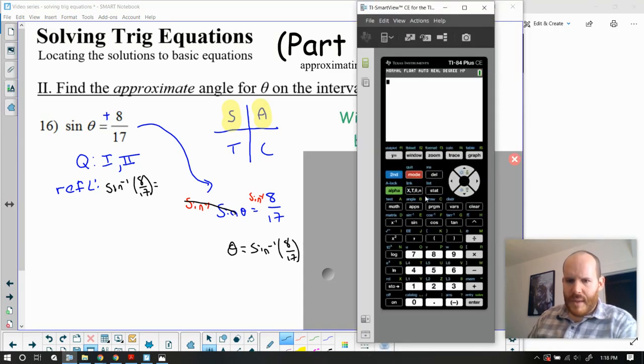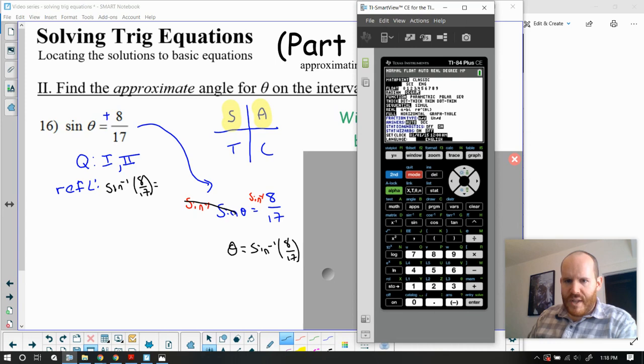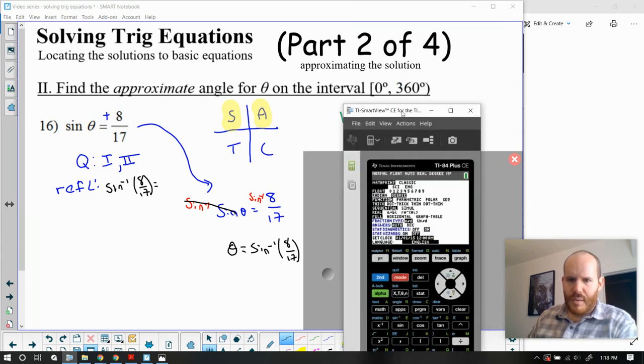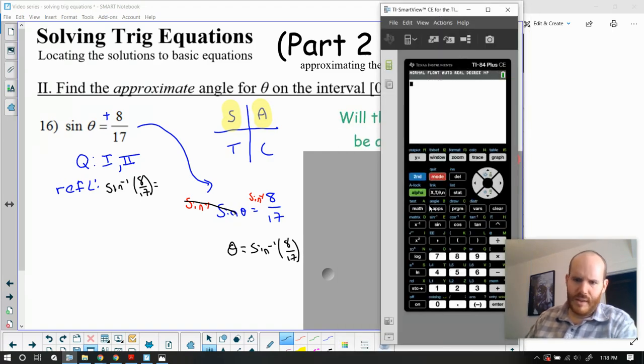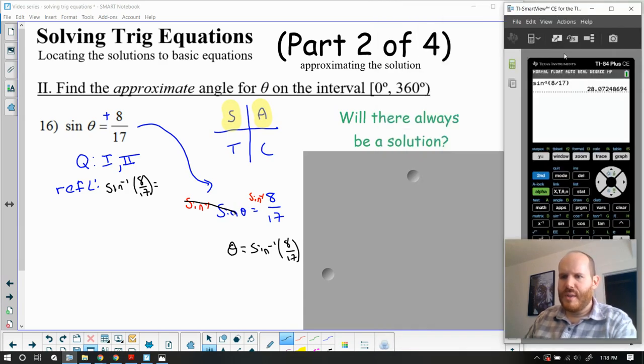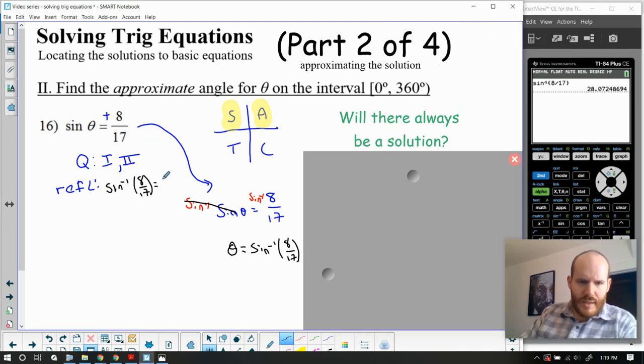So I'm going to pull out my handy calculator. I'm going to make sure that I am in degree mode. The reason I'm in degree mode is that I am looking for solutions between zero and 360 degrees, which means I want a degree answer. So I'm going to use sine inverse, which is the second feature of the sine function. So second sine inverse, and I'm going to do sine inverse of 8 divided by 17. That gives me 28 degrees. Now I'm going to round to the nearest tenth, so that looks like 28.1 degrees.